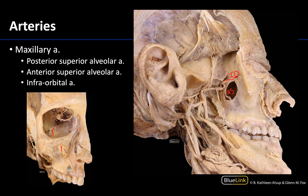You can also see the posterior superior alveolar artery. The posterior superior alveolar artery will typically arise in the pterygopalatine fossa but actually run back through the pterygomaxillary fissure — kind of backwards — and enter into the maxilla via the alveolar foramina. This is going to be the dominant supply to the maxillary molars and premolars.